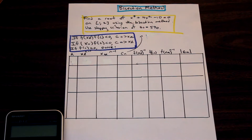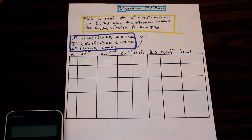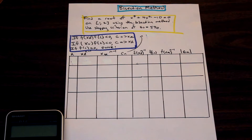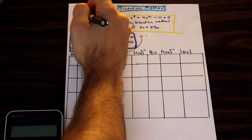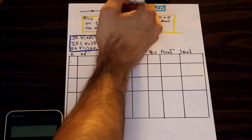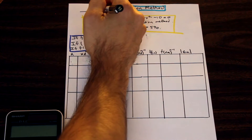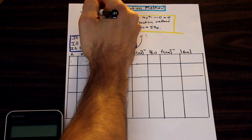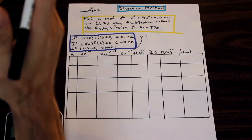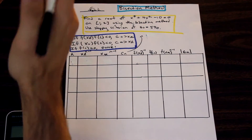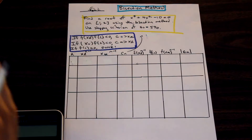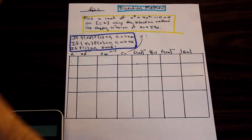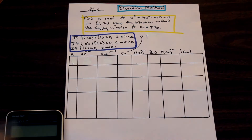So we have a question here: find a root of x cubed plus 4x squared minus 10 equals 0 on the interval 1 to 2 using the bisection method, with a stopping criteria of epsilon s equal to 5%. Essentially, you have a root on the x-axis, and you're going to find a point, then go over here, and over here, getting closer and closer to the root by finding the center point. Based on whether the value is negative or positive, you know whether you're on the left or the right side of the root.